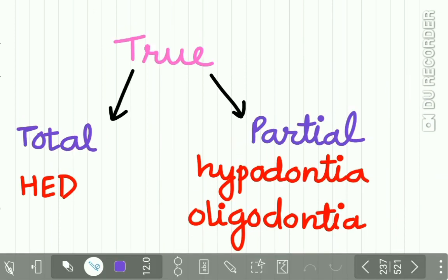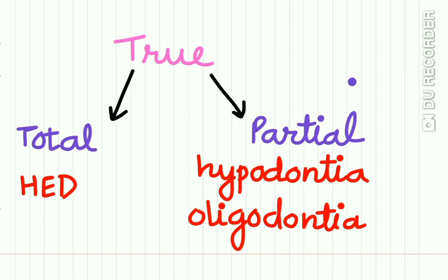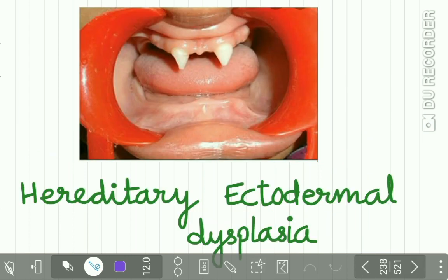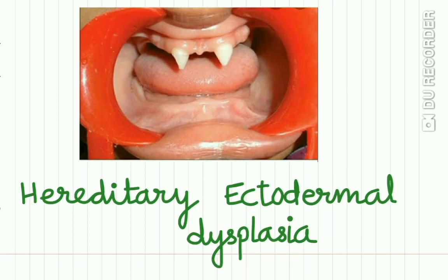True anodontia is of two types: total true anodontia, in which all the teeth are absent — this condition is relatively rare and is found in hereditary ectodermal dysplasia — and true partial anodontia, in which only a few teeth are absent from the dentition. True partial anodontia is also called hypodontia or oligodontia.